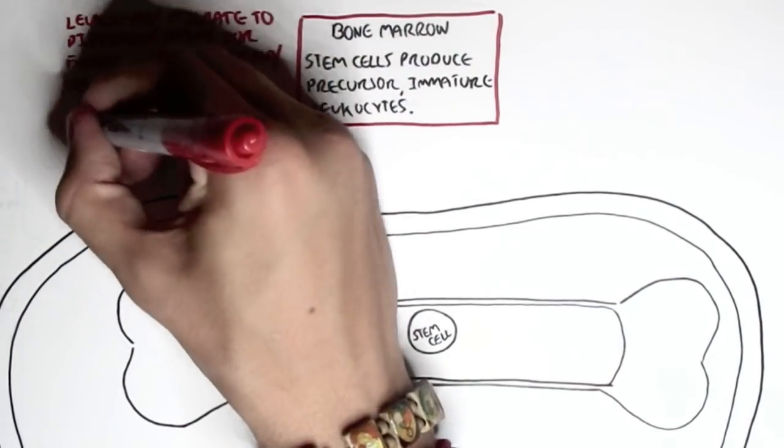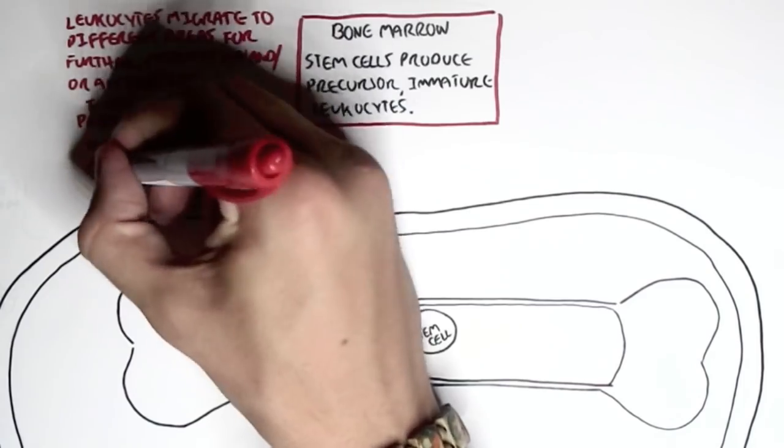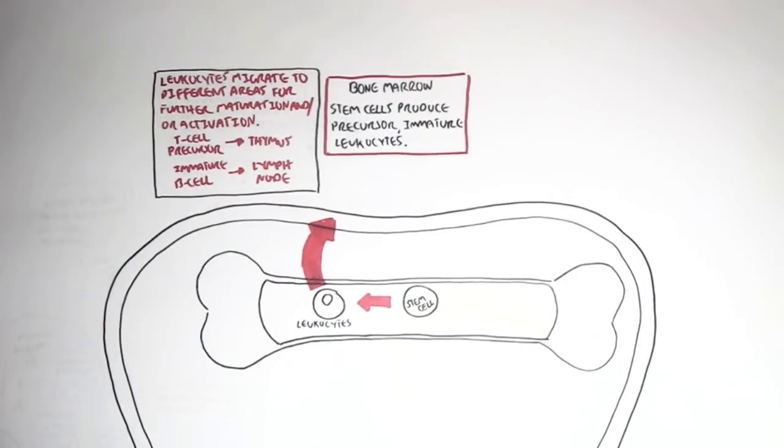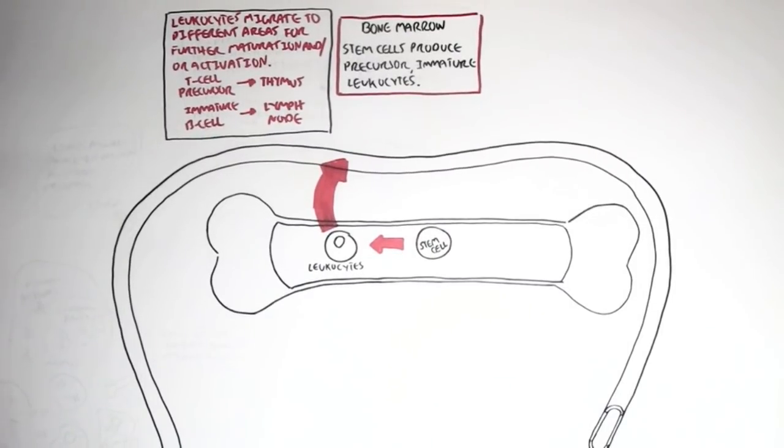An example of this is that the T cell precursor, the lymphoid precursor, will travel to the thymus to become mature. The immature B cell will travel to the lymph node to become activated.